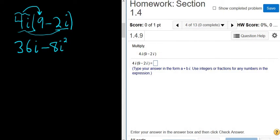OK, here's the key. i squared is equal to negative 1. That's because i is equal to the square root of negative 1. So if you square both sides, you get i squared equals negative 1. Totally worth memorizing.